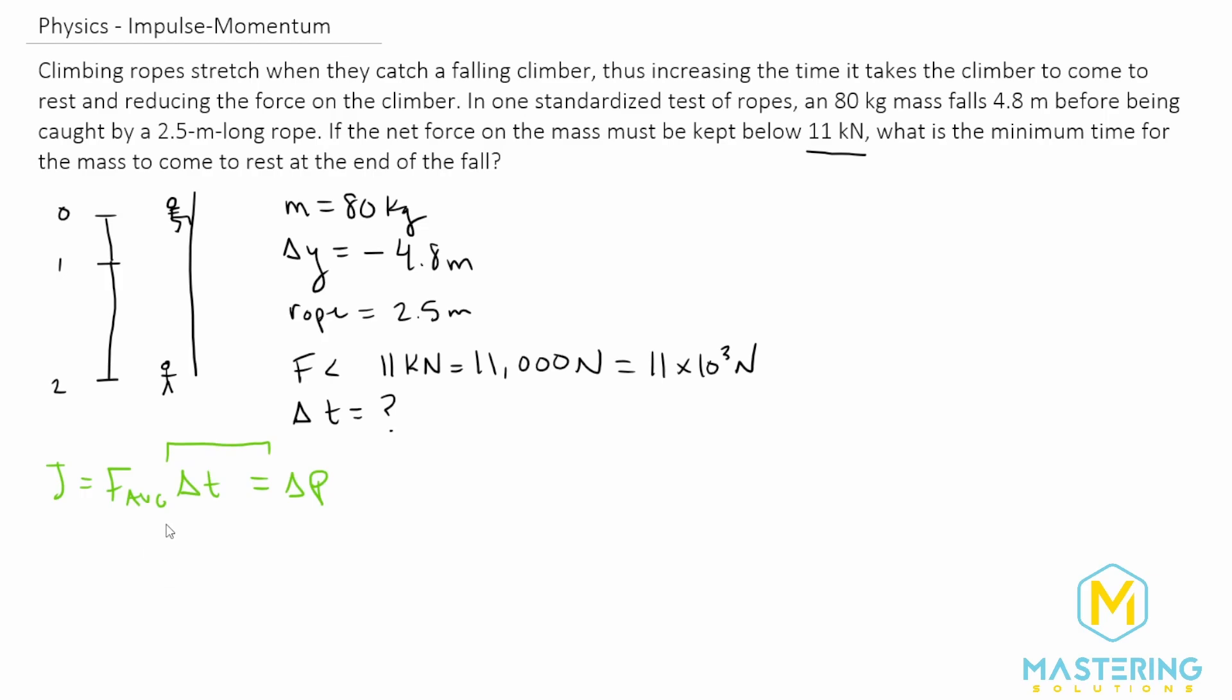We're going to be using these two right here together to solve this problem. So if we isolate t by dividing the average force on both sides of the equation, we have delta t is equal to the change in momentum divided by the average force.